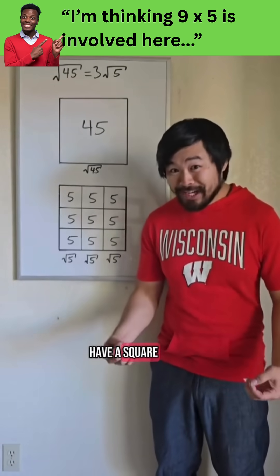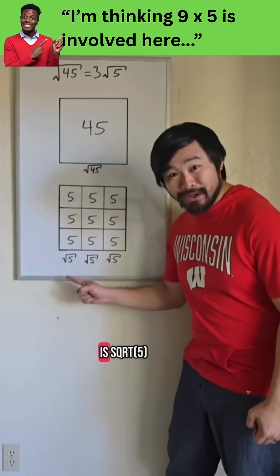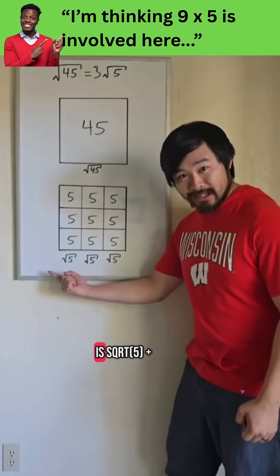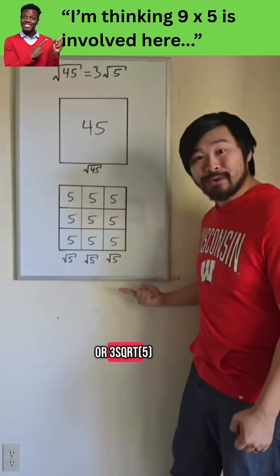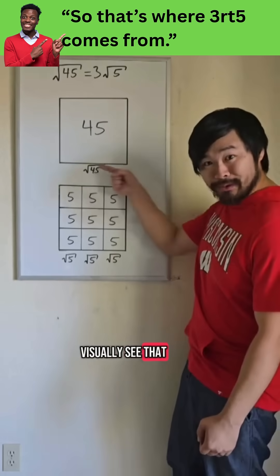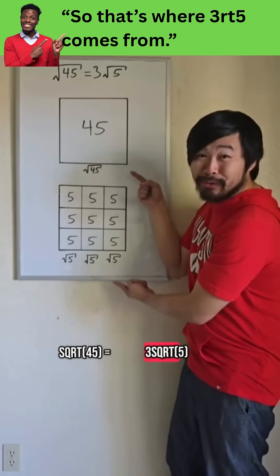And if we have a square with an area of 5, the side length of that square is the square root of 5. So this side length is the square root of 5 plus the square root of 5 plus the square root of 5, or 3 root 5. So we can visually see that the square root of 45 equals 3 root 5.